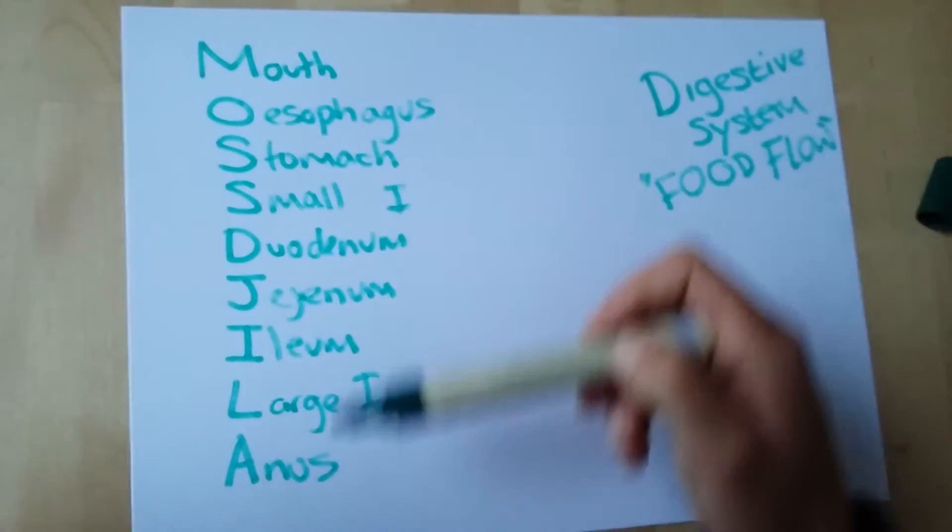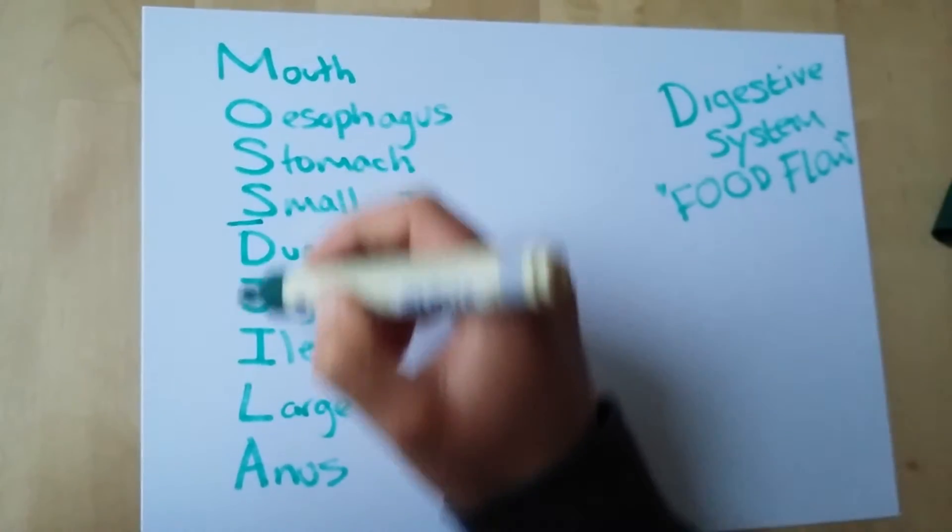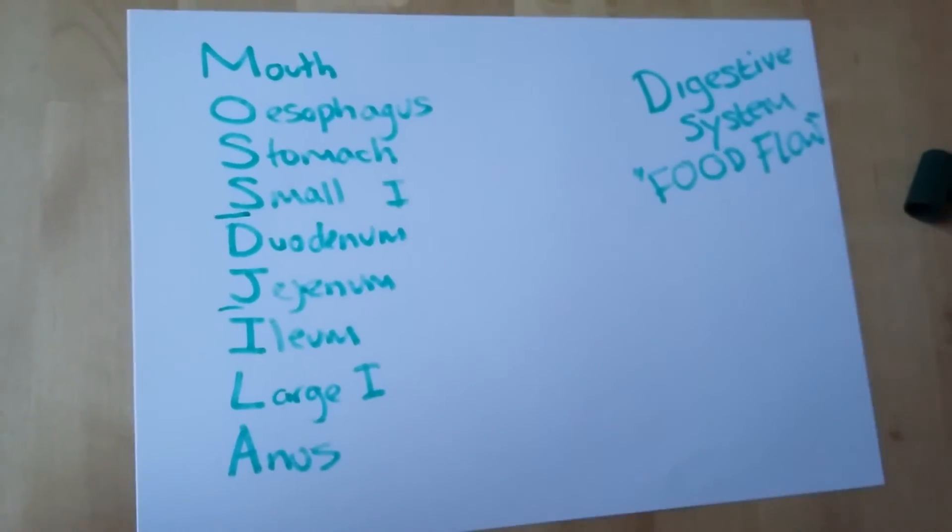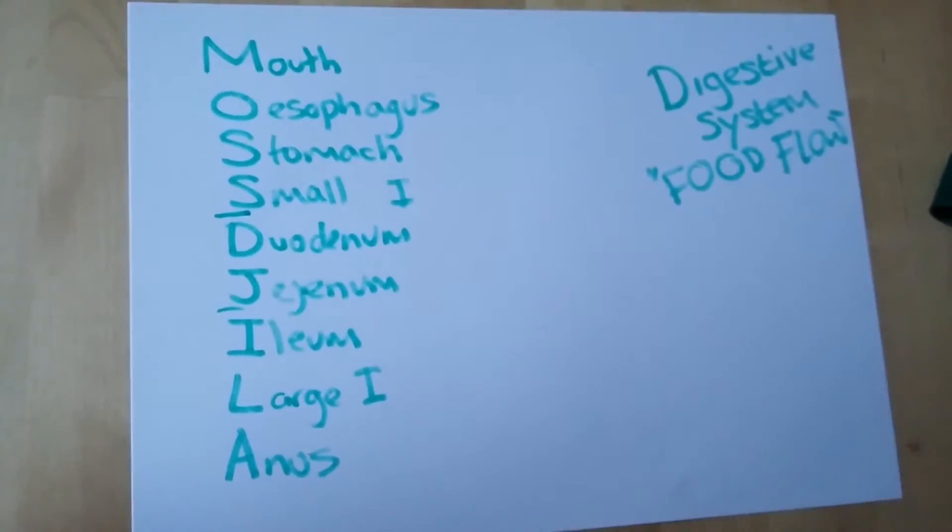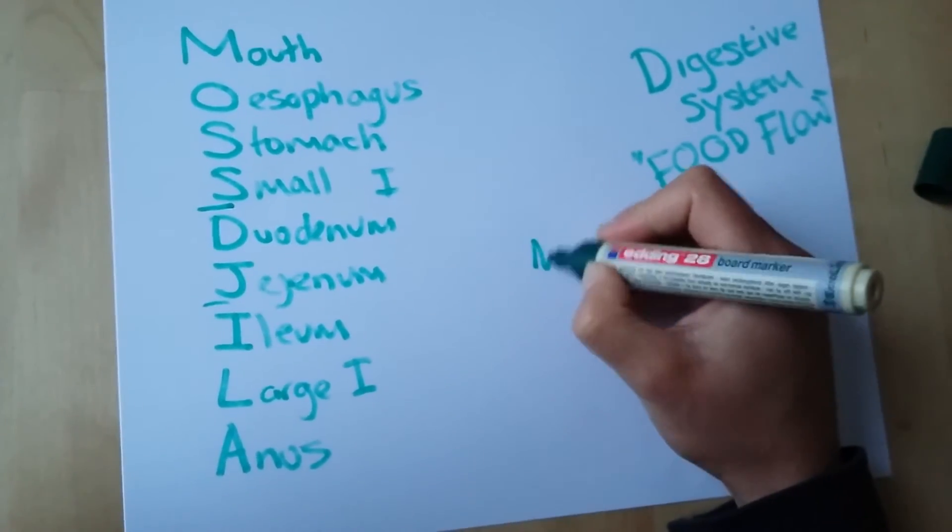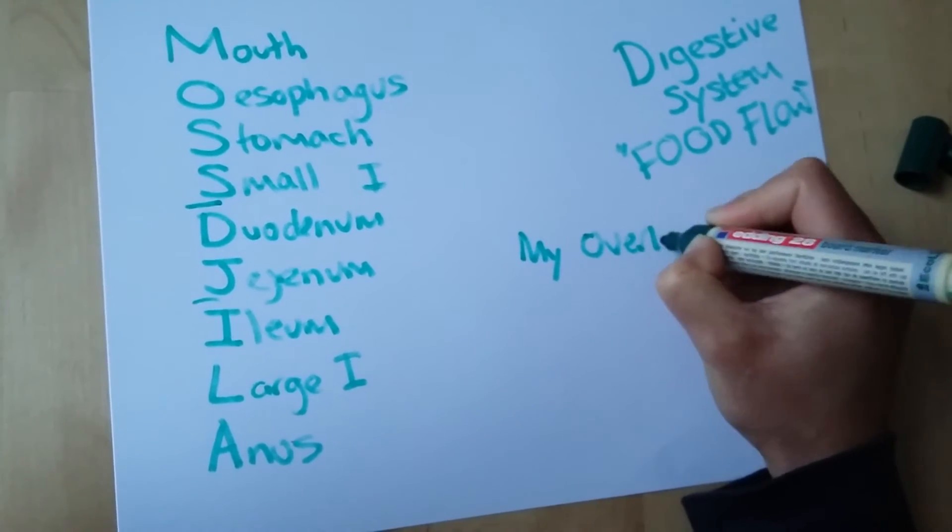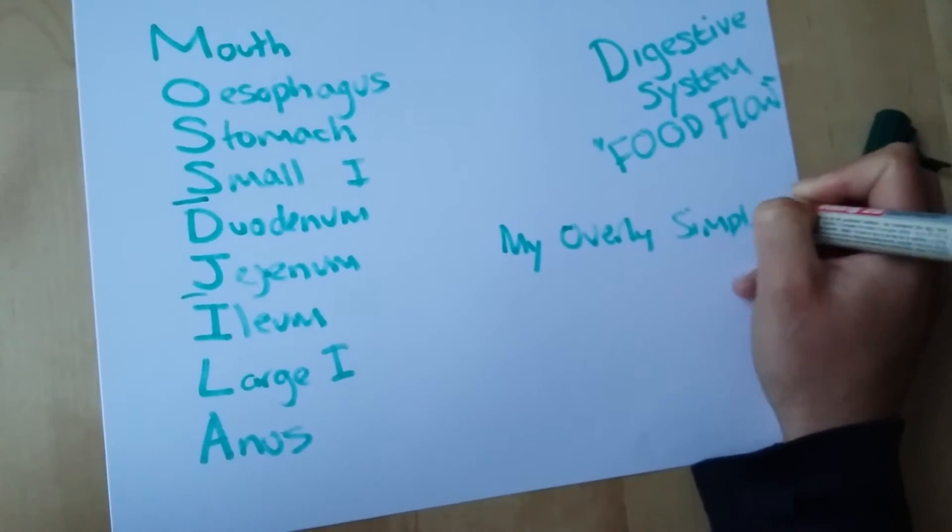One way you can remember that is, like I said, Moss is a DJ in LA. The other way to remember it is a little sequence of words, and this is my overly simple system.